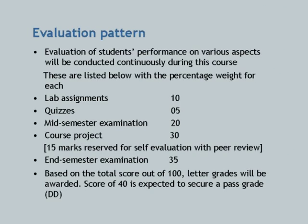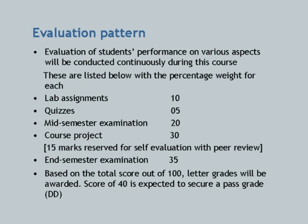The remaining 15 marks are reserved for self-evaluation, where each one of you evaluates both quantitatively and qualitatively how much work you have done. There will be 2 stages. However, this self-evaluation will have to be peer reviewed — all 20 people in the group must agree on the marks. If they don't agree, the consensus will determine the marks awarded.